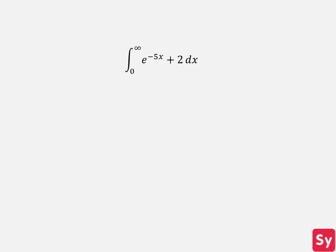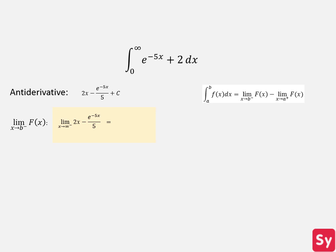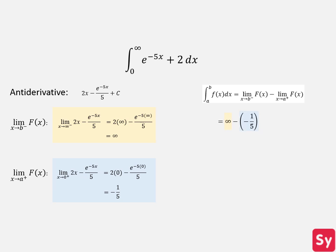Last example, we have the integral from 0 to infinity of e to the negative 5x plus 2. We first compute the indefinite integral. Now we find the limit as x approaches infinity from the left of the antiderivative. We plug infinity into the antiderivative and simplify, getting infinity. Next, we find the limit as x approaches 0 from the right of the antiderivative. We plug 0 into the antiderivative and simplify, getting negative one fifth. Now we plug these values into the equation and simplify, getting infinity as our answer.